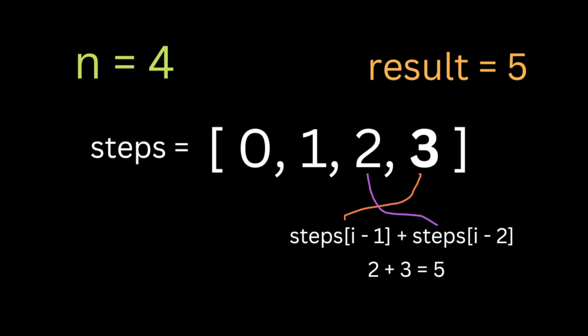So to solve this problem, we're going to create a new array and store the output at each step, then finally return the last value in the array as the output. For example, let's consider the value of n is four — there are five ways to reach the top. So we use a dynamic programming approach for this problem.